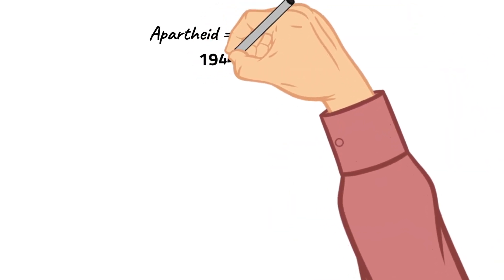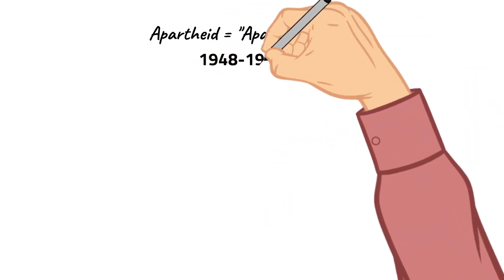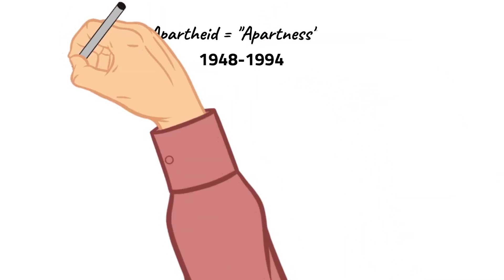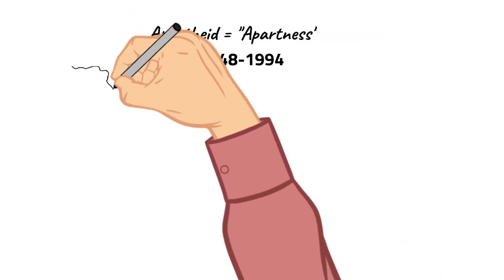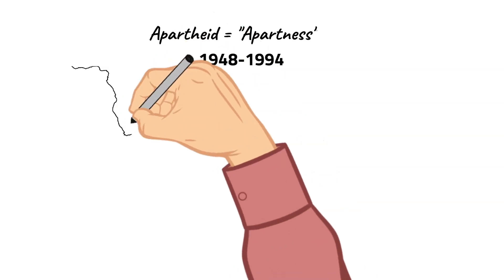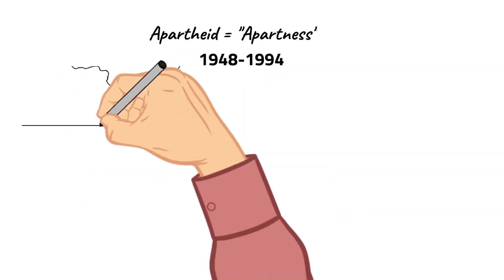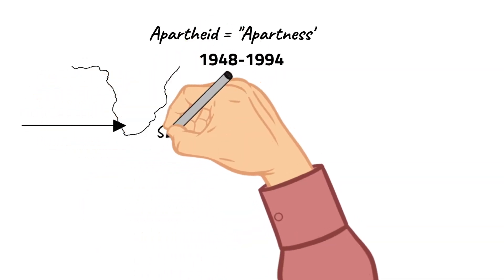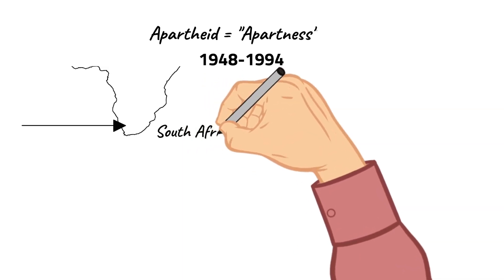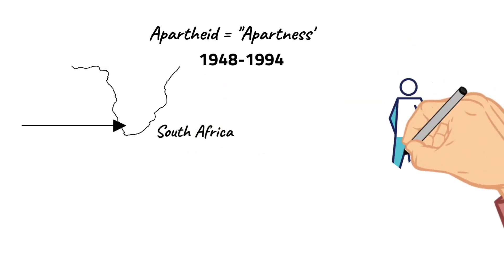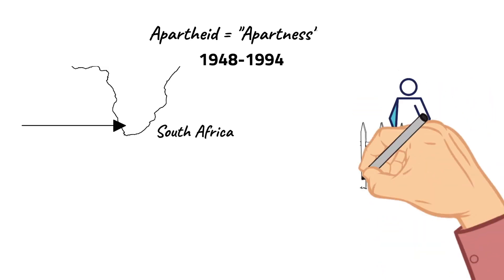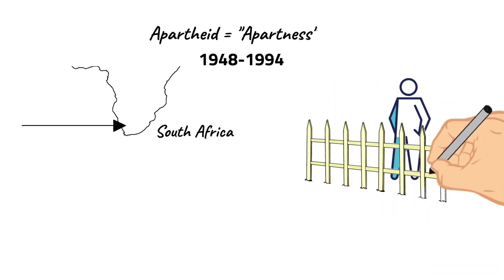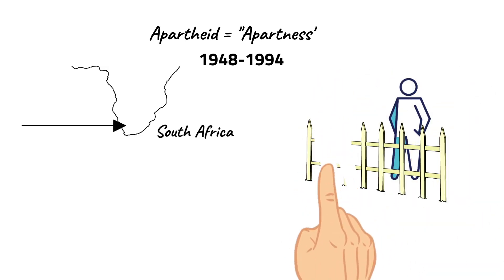The word apartheid means apartness in the African language, and this word is quite fitting when looking at what this legislation was that was upheld in South Africa from 1948 to 1994. Officially, apartheid was a system of legislation that allowed for segregation or separation against non-white citizens of South Africa.